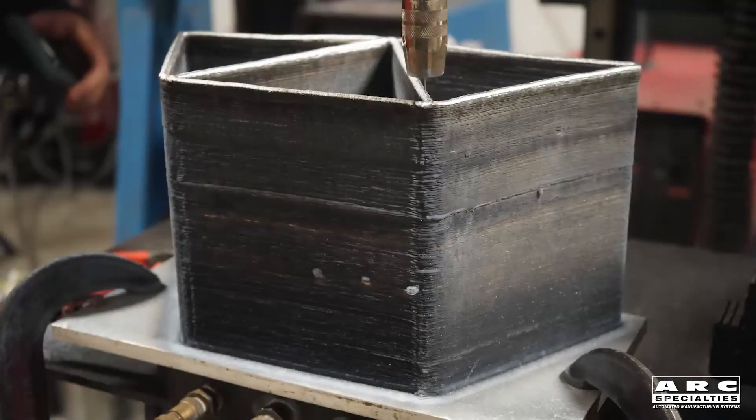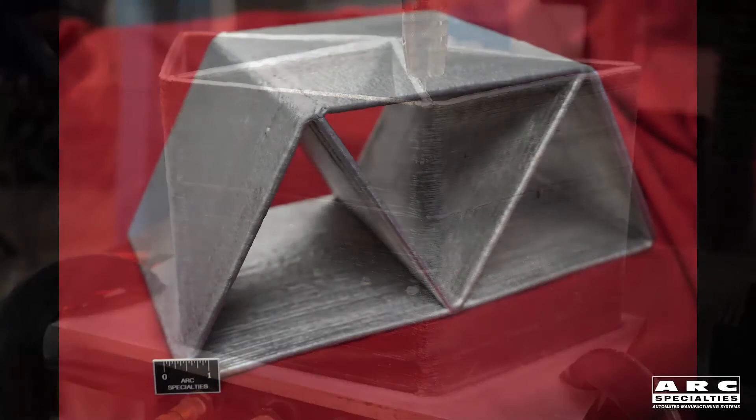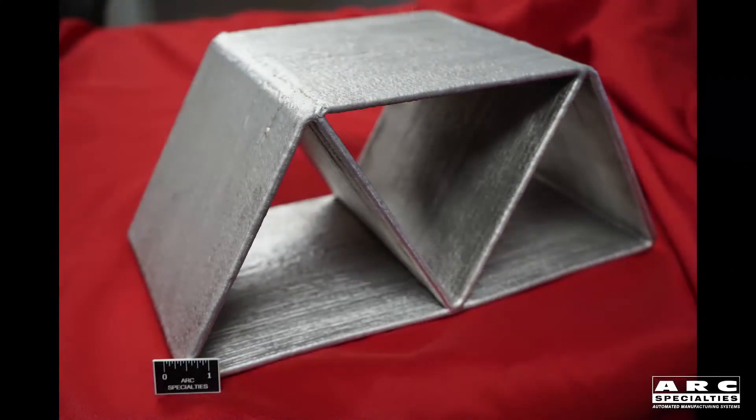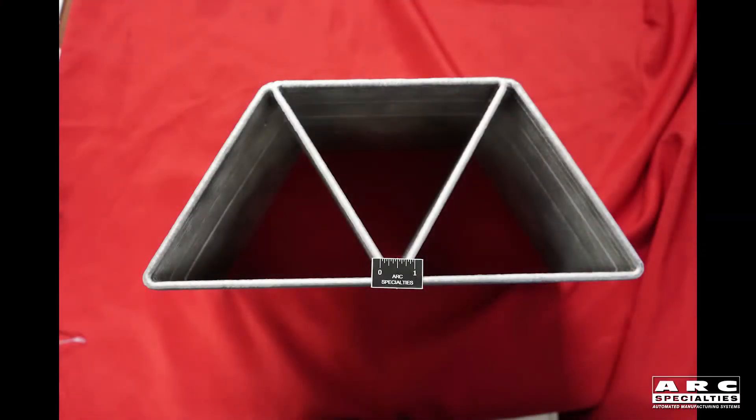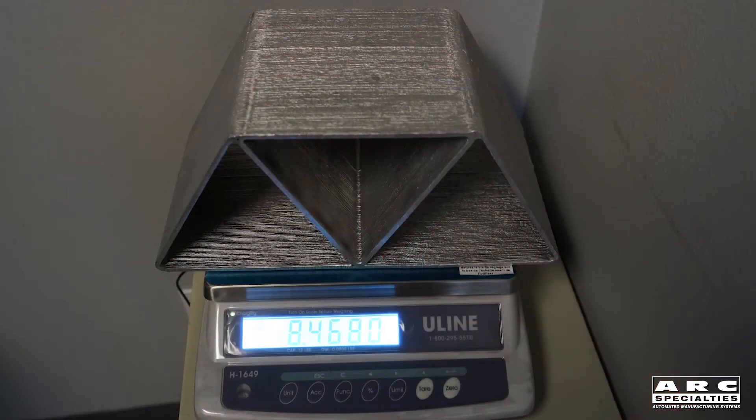So what we built is an aluminum truss, 15 inches long, seven inches tall, about eight inches wide, and quarter inch thick. If we'd have machined this from a solid billet, it would have taken days and wasted a great deal of material. Instead, we have an efficient, lightweight additive manufactured part. The whole thing weighed less than eight and a half pounds.